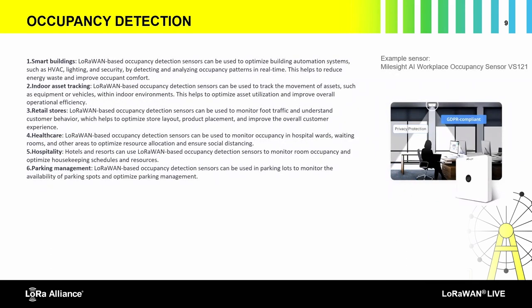A similar device is the occupancy sensor, which detects whether a person is present at a desk or in a space. A key advantage is that because images cannot be transmitted over LoRaWAN, nobody can hack in and observe people. Privacy is preserved by design, and there are many applicable use cases for this type of sensor.